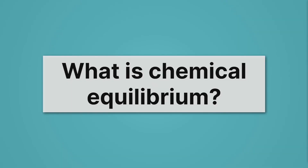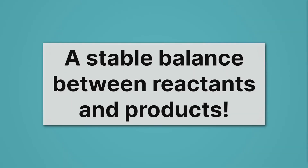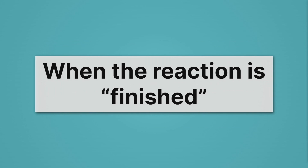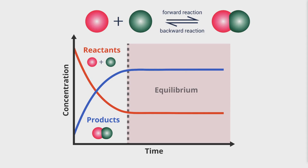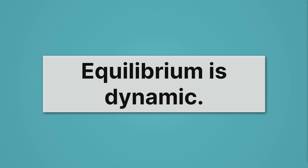So what is chemical equilibrium? It's a stable balance between reactants and products — it's when the reaction is finished. Here in the pink region, our reaction has a stable balance of reactants and products that aren't changing. However, the details are a little more complicated, because equilibrium is dynamic.